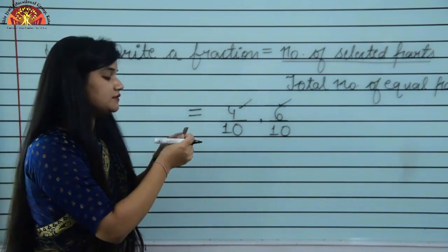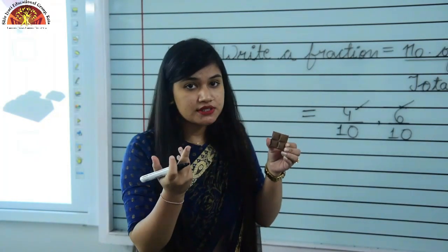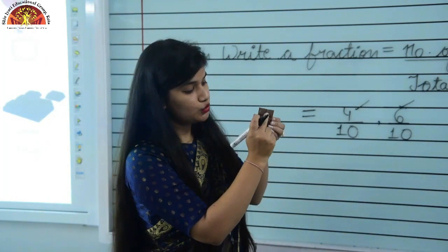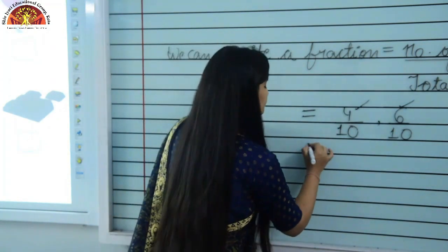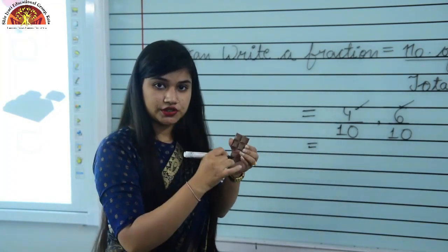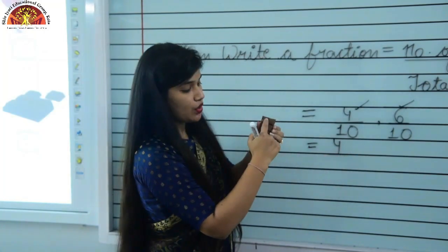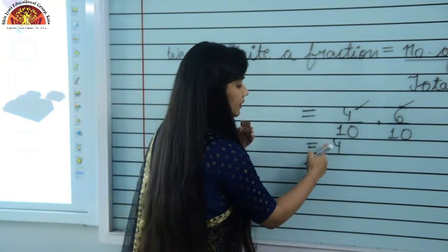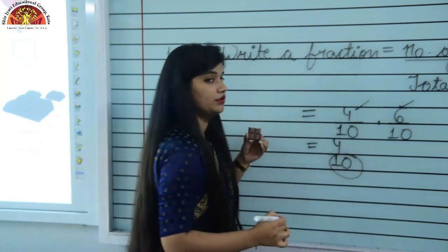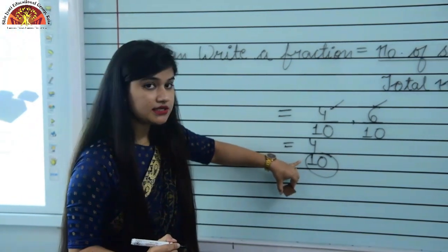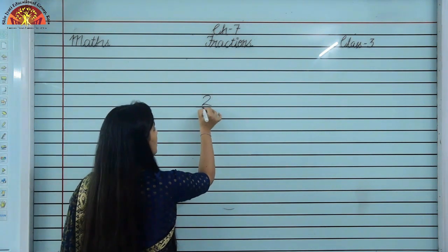Now suppose the question is: what is the fraction of remaining pieces? How many remaining pieces are here? 1, 2, 3, 4 — we have 4 remaining pieces. The remaining part comes as the numerator and the total number of pieces, that is 10, always comes as the denominator. So the fraction of remaining pieces is 4 upon 10, which is equal to 2 upon 5.